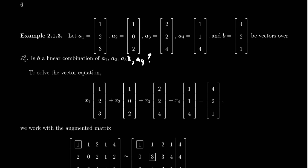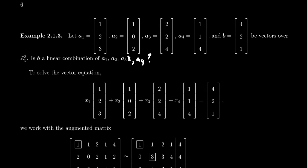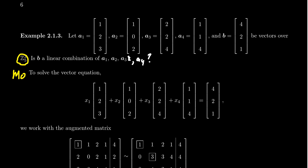In this video, I want to consider again the question: is B a linear combination of other vectors? Specifically, is B a linear combination of the vectors A1, A2, A3, and A4? So we have four vectors in consideration this time. We're also going to change the scalars — in the previous example we worked over the real field, but this time I want to work mod five. Z5^3 means we work arithmetic mod five and our vectors will have three entries.